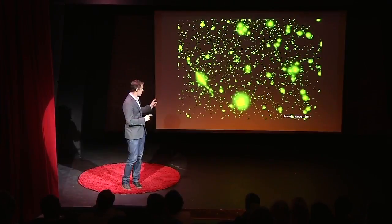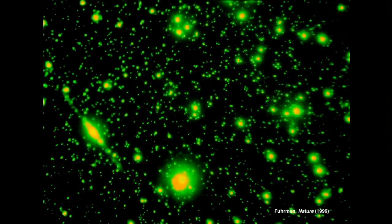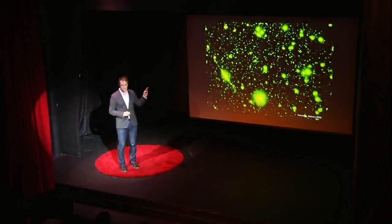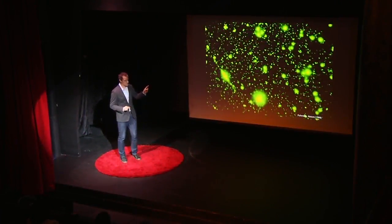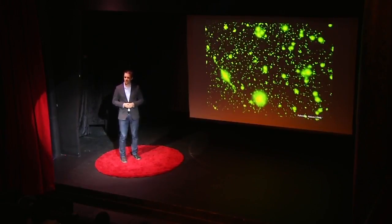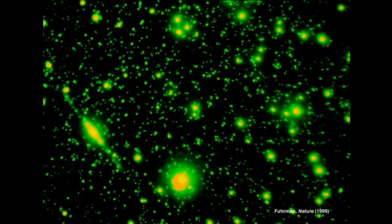What you're seeing is a very small sample of water taken from the ocean. That sample has been stained with a fluorescent dye that lights up any DNA the color green. DNA is the blueprint of life. So what you're seeing is life. Those very small green dots, in fact, are viruses.